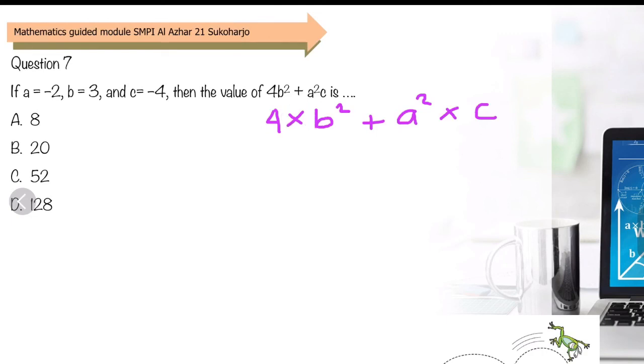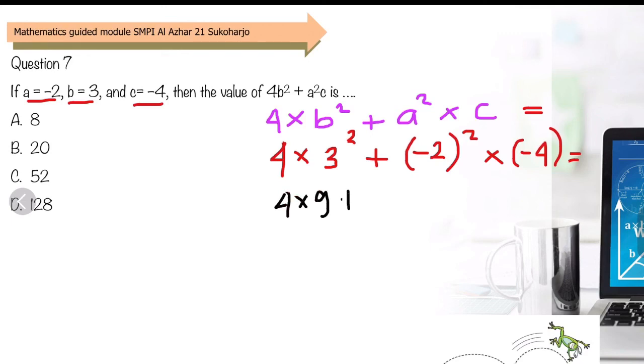Let's calculate: 4 times B squared. B is 3, so 3 squared, plus A squared, A is negative 2, so negative 2 squared, times C, which is negative 4. Then 4 times 9 plus negative 2 squared, which is negative 2 times negative 2, equals 4. Multiply this first: 36 plus 4 times negative 4, which is negative 16. The result is 20. So the answer is B.